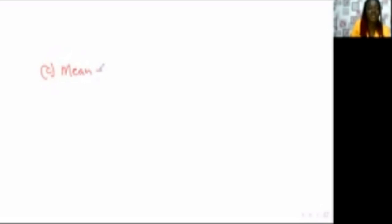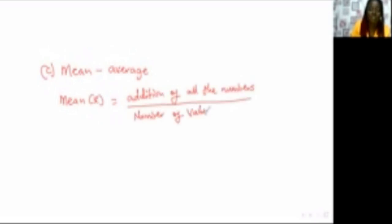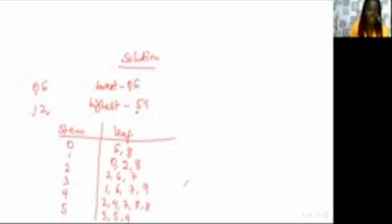Then we come to the mean. The mean is always equal to the average. You add all the numbers together, then divide by the total number of values. So you're going to add everything together — 6 plus 8 plus 10, and so on — then divide by the total count, which is 20.